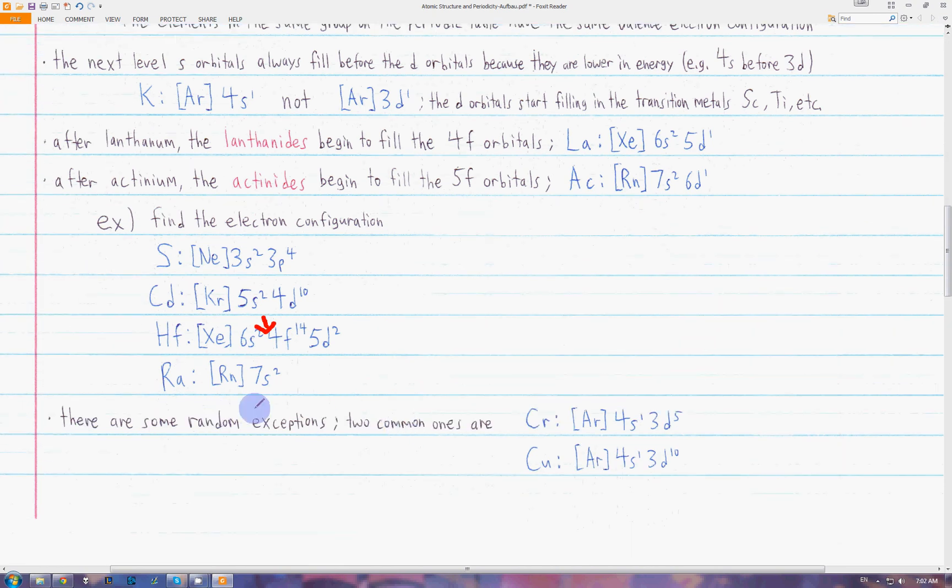There are some exceptions that you have to watch out for. Two of the most common ones are chromium and copper. For chromium, we'd expect it to be argon, 4s2, and then 3d4. However, one of the electrons in the 4s actually goes to the d, so we actually have 4s1, 3d5. Same for copper. We expect it to be 4s2, 3d9, but one of the ones in the s goes to the 3d. So we have 4s1, 3d10.